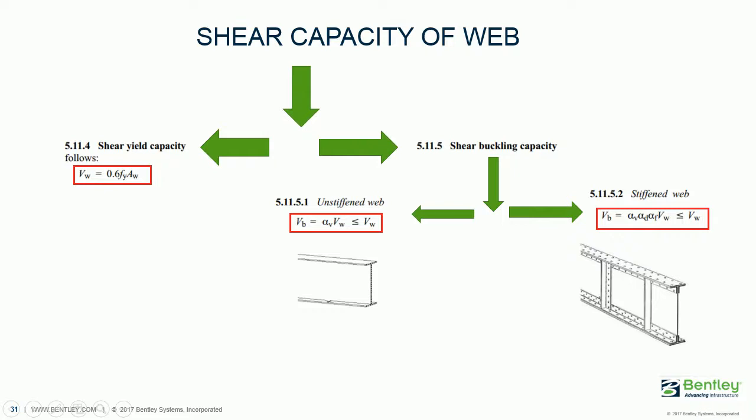The shear buckling capacity check is also subdivided into two different parts depending on the type of your section. First one is the unstiffened web. The unstiffened web is something like if you have any I-shape section or plate section which doesn't have any intermediate lateral stiffener along its length of the web section. This web hasn't been stiffened laterally, so it can undergo buckling very easily.